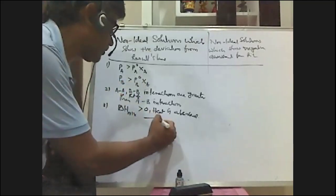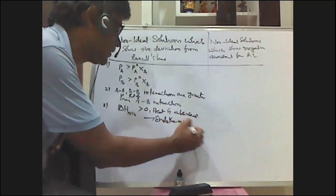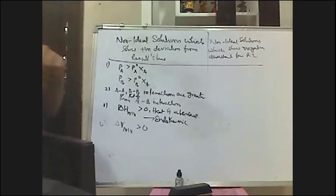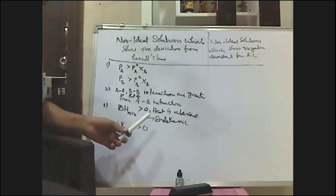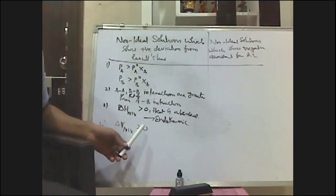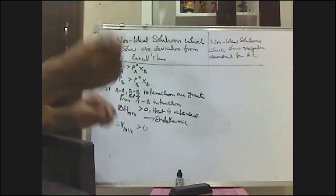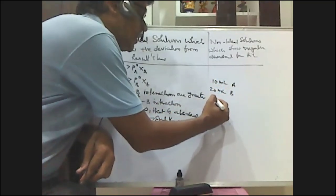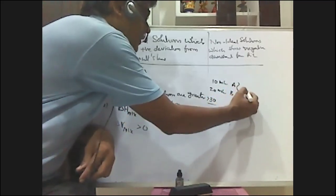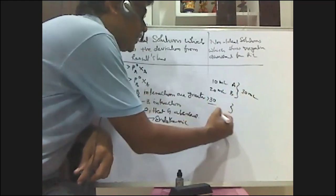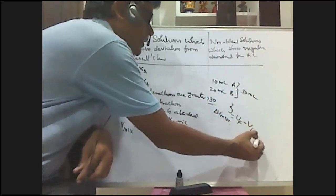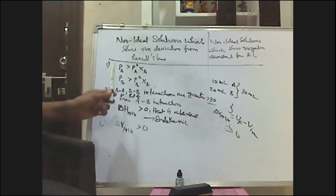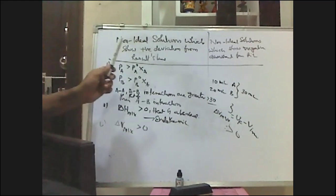These mixing processes are endothermic. Additionally, ΔV mixing is greater than zero — during the formation of non-ideal solutions showing positive deviation, the final volume is always greater than the initial volume. For example, if you take 10 mL of A and 20 mL of B, the resultant solution volume is greater than 30 mL. So the final volume minus the initial volume is always greater than zero. These are the characteristics of non-ideal solutions which show positive deviation from Raoult's law.